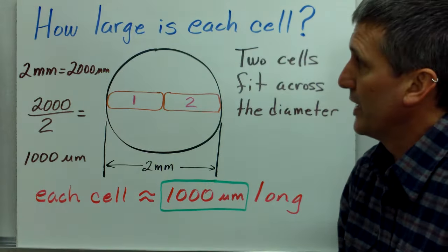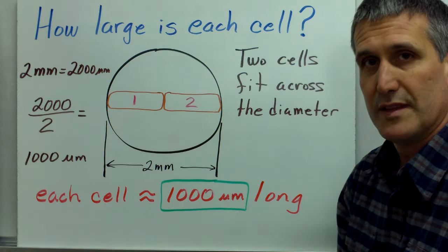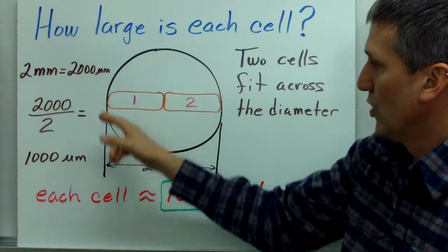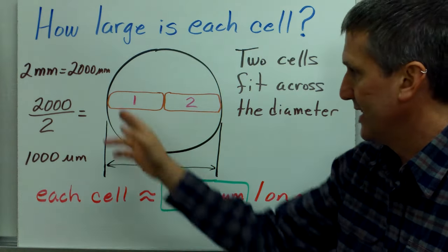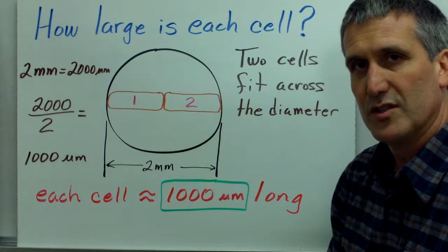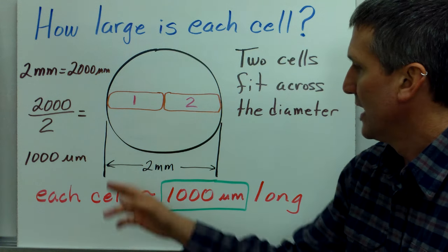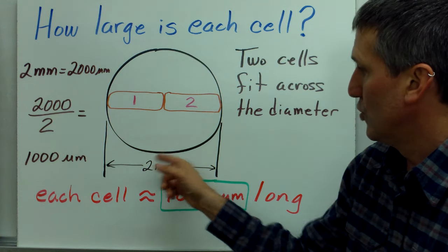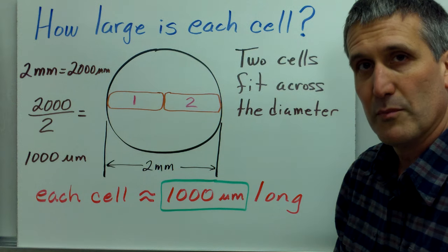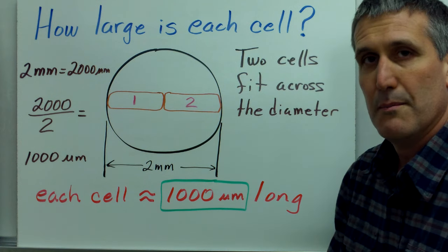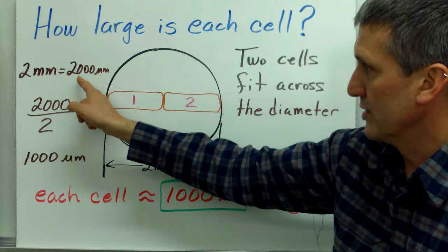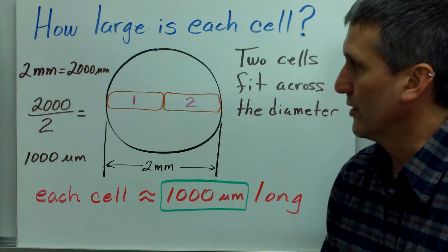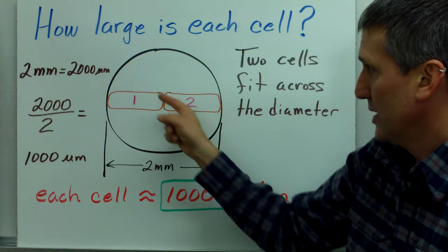So let's take this example here. How large is each one of these cells? So notice how it's given to us that the diameter of this particular field of view is 2 millimeters in diameter. So 2 millimeters can be converted to micrometers because we know that 1 millimeter equals 1000 micrometers. So 2 millimeters equals 2000 micrometers.